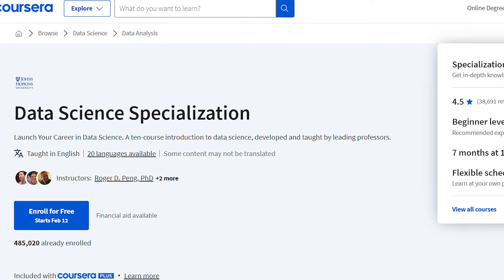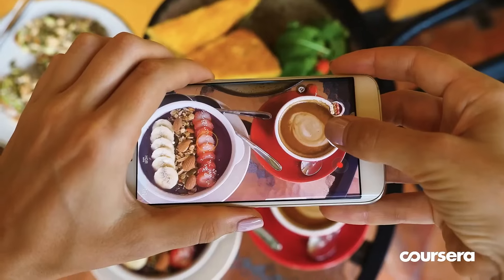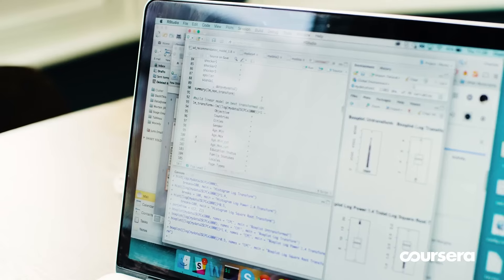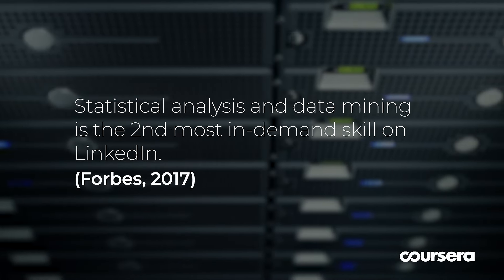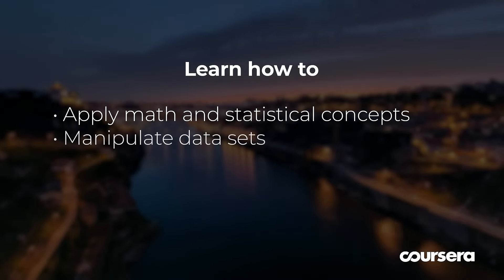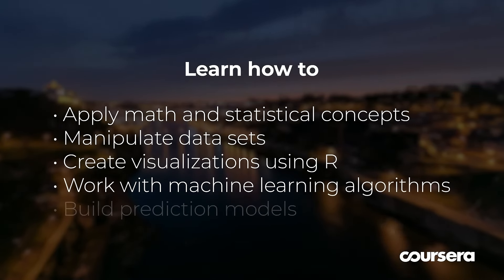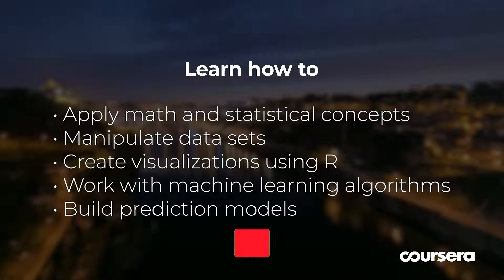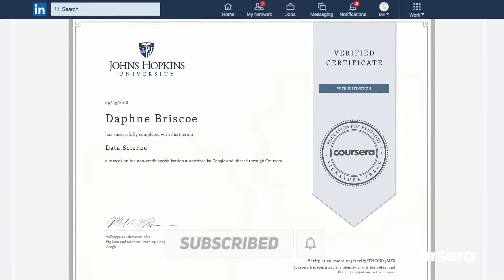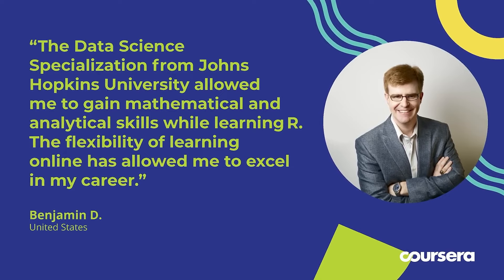Number two: Data Science Specialization. The second certificate on our list is the Data Science Specialization, offered by Johns Hopkins University on Coursera. This is a specialization that consists of 10 courses that cover the key topics and skills of data science, such as data manipulation, data analysis, data visualization, regression, classification, clustering, machine learning, and reproducible research. You will learn how to use R, one of the most popular and powerful programming languages for data science, to perform data analysis and create data products.